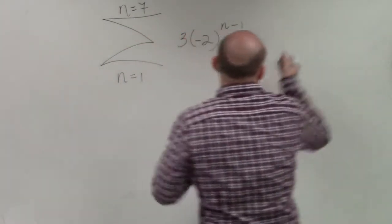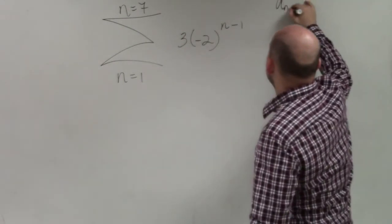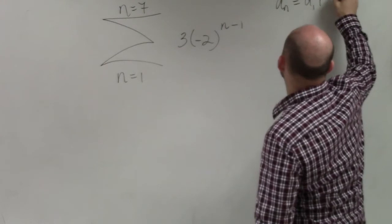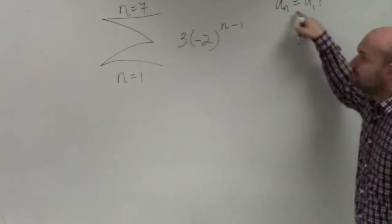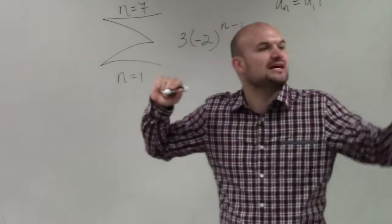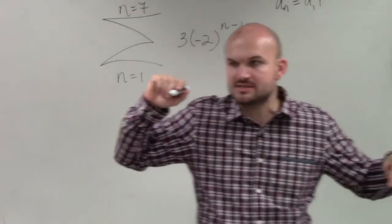So what I wrote to you guys before in a geometric sequence, a sub n equals a sub 1 times r raised to the n minus 1. That is the explicit formula for a geometric sequence. That was given to you guys two class periods ago. We did notes on geometric sequences.